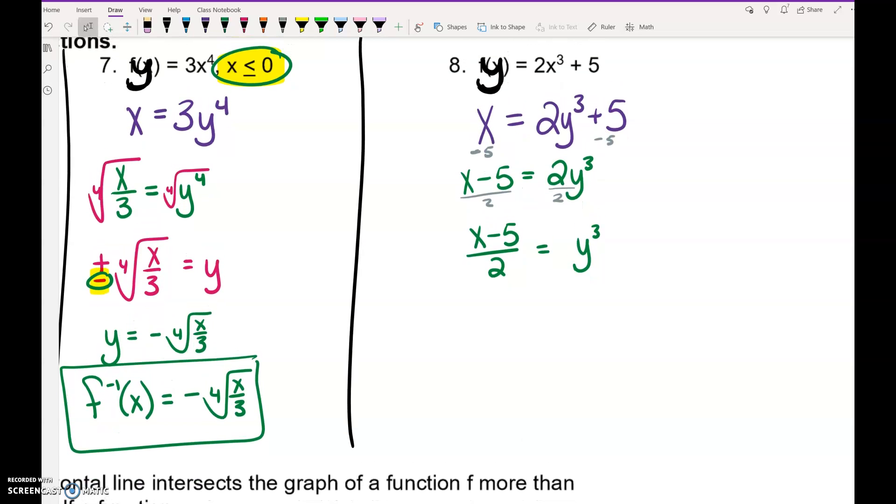Hopefully you at least have this much. You can just do x - 5, that whole thing divided by two to get that y³ by itself. Then we need to cube root, because that's an odd index, we don't need the plus minus. So y = ³√((x - 5) / 2). To write this as our full correct answer, instead of y equals, put f⁻¹(x) = ³√((x - 5) / 2).